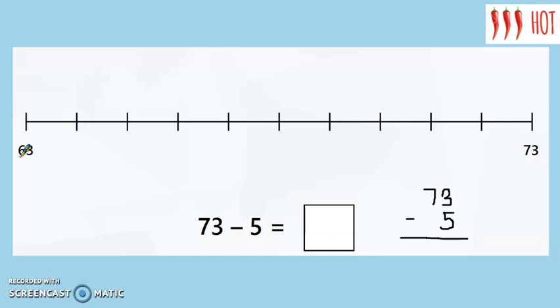Now I want you to pause the video and have a go at this by yourself. First, take away the number of ones that 73 has. And then take away any extra jumps that you need to make 5 altogether. Pause the video. Do it in your book. And then when we do it together, I want you to check if you did it right. Well done, guys. Let's see if you did it right.